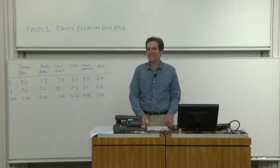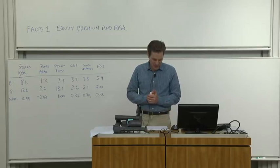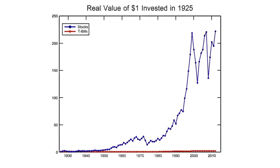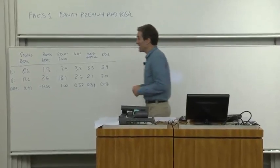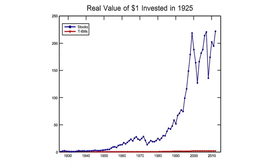First set of facts: facts about stock markets, the equity premium, risk and return. The first picture shows the total return on the stock market versus the bond market. If you invest $1 in 1926 in stocks versus bonds, how much money do you have at each date? Taking out inflation, these are real quantities. Stocks earned a whole lot more than bonds. If your great-grandparent put $1 in stocks in 1926, you'd have about $250 real dollars today. Fact one: stocks paid a lot more than bonds.